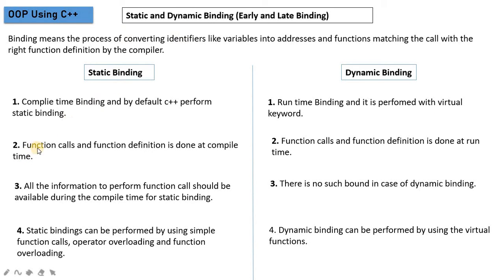In static binding, the function call and function definition are matched at compile time. For static binding, all the information needed to perform the function call must be available during compile time. This means the compiler connects the function call to its definition before the program runs. All information related to compile time must be ready.